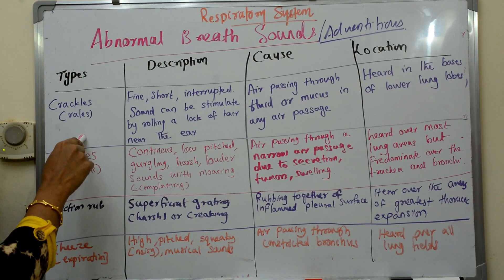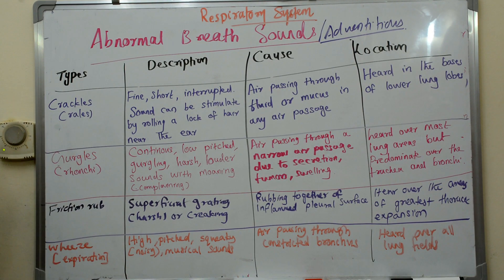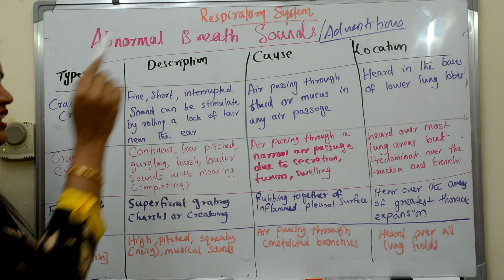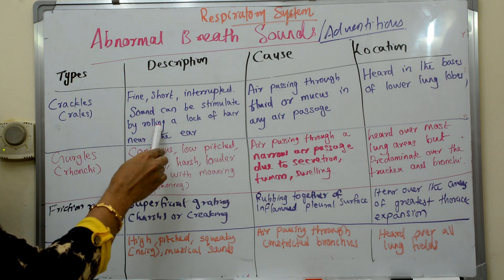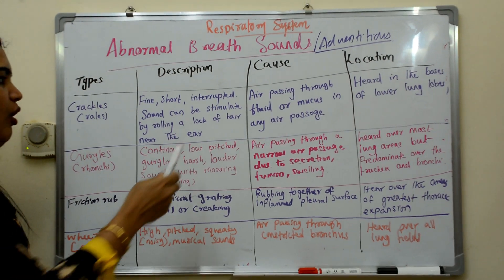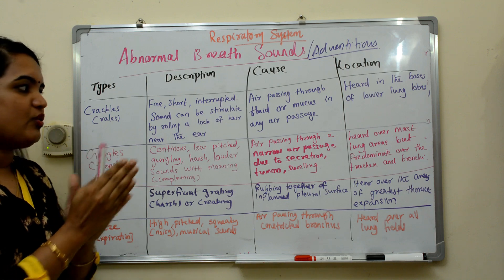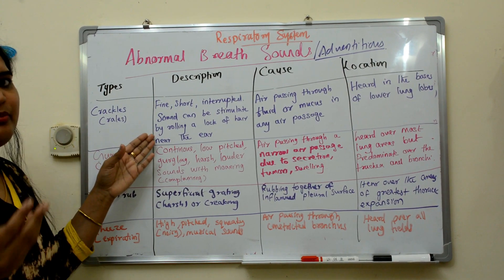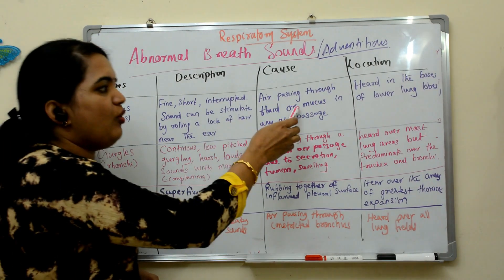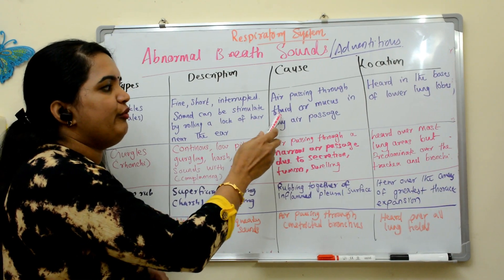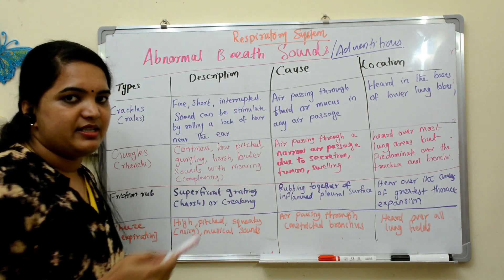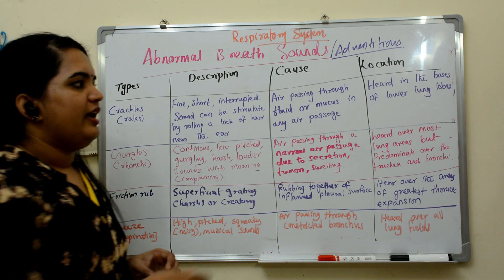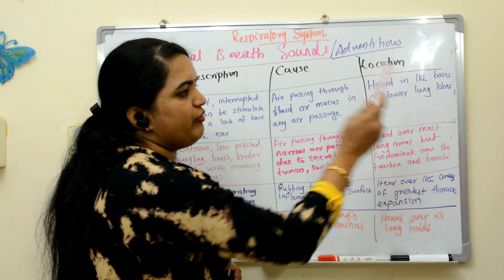The first adventitious sound is crackles — another name is rales. It is a fine, short, interrupted sound that can be simulated by rolling a lock of hair near the ear. The main cause is air passing through fluid or mucus in the air passages, especially seen in pneumonia. The location is heard at the bases of the lower lobes.